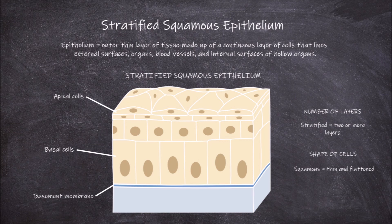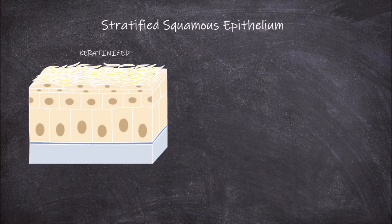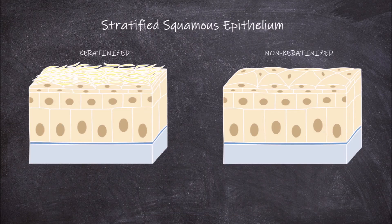There are two types of stratified squamous epithelium based on the amount of keratin accumulation on the top layers of cells: keratinized and non-keratinized.